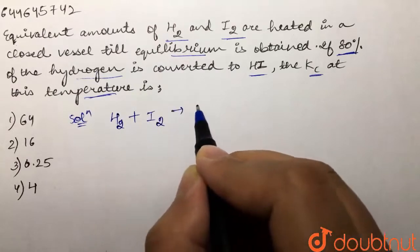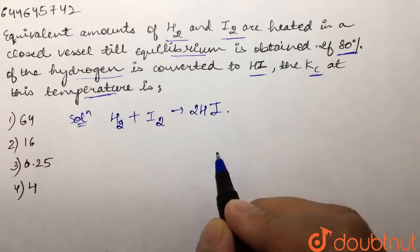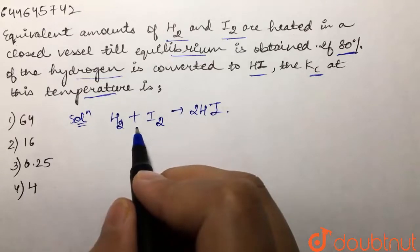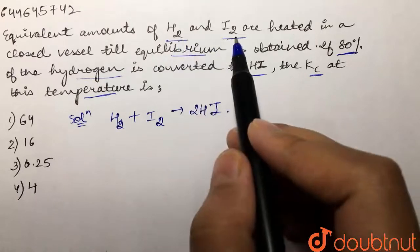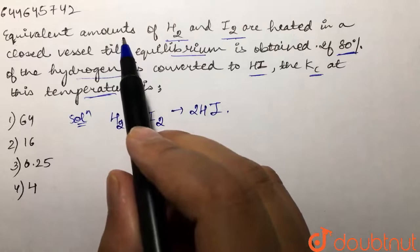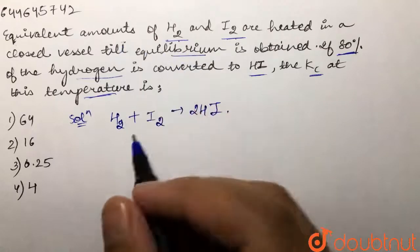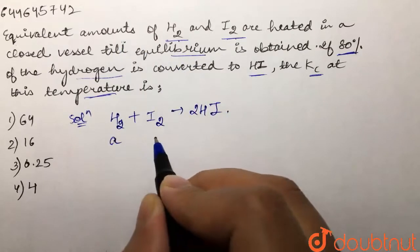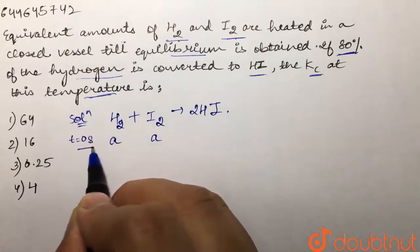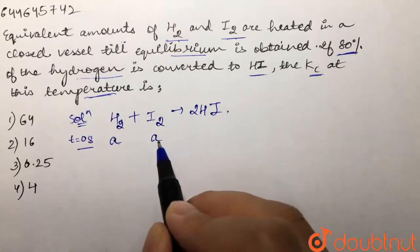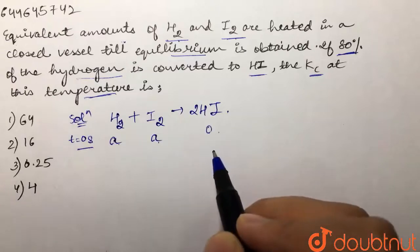In a closed vessel we are heating hydrogen and iodine in equivalent amounts. Let these amounts be 'a'. We are taking 'a' moles of hydrogen and 'a' moles of iodine. At t equals zero seconds, we would have 'a' and 'a' moles of hydrogen and iodine and zero moles of HI because no product would be formed at this time.